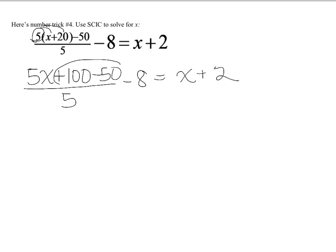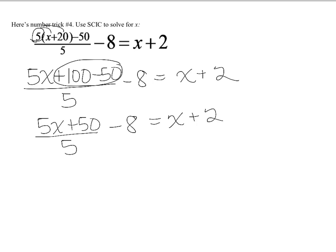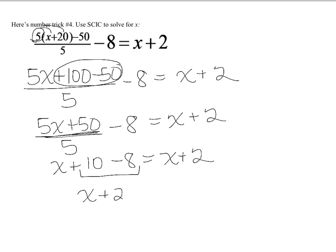Let's combine like terms: 100 minus 50 is 50, so I get (5x + 50) over 5, minus 8, equals x plus 2. Because 5x and 50 are divisible by 5, I simplify to get x plus 10, minus 8, equals x plus 2. Then combining like terms, 10 minus 8 is 2, giving me x plus 2 equals x plus 2.